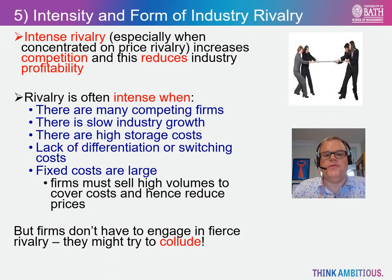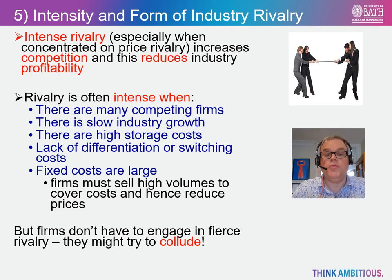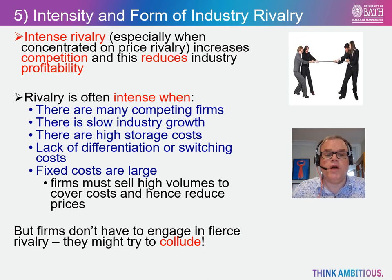The fifth and final force is that of the intensity of rivalry between existing firms in the market. This relates to the existing market structure. In essence, when rivalry is intense then this will reduce profitability, and as we know from oligopoly theory, where firms recognise their mutual interdependence and tacitly collude, then rivalry is less intense and the market's profitability will be higher. Rivalry is particularly intense where there are many firms competing for market share and they largely use price as a competitive weapon. It can also be intense in situations when the market is growing slowly or is mature and firms are seeking to shed stock because holding stock is expensive. Similarly, in sectors where fixed costs are high, firms must sell high volumes to acquire economies of scale and hence industry prices and profits are likely to be hit at least in the short run.